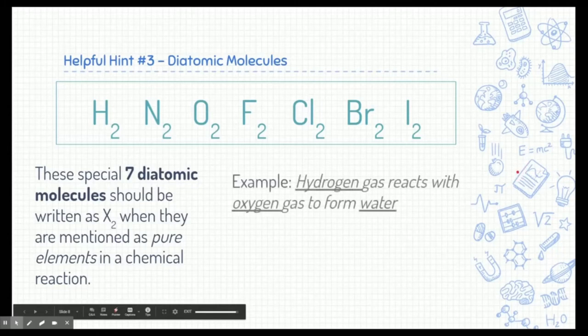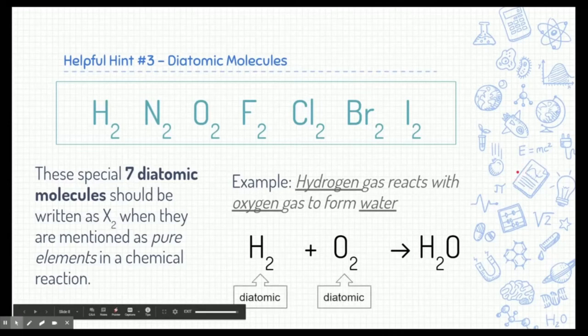So, I'm going to give you an example of that. Here, we have hydrogen gas reacting with oxygen gas to form water. Now, when we write hydrogen, we don't just write H, we write H2 because it's one of the special seven diatomic molecules. Same with oxygen. Oxygen is one of the special seven as well, so we write O2. So, both hydrogen and oxygen are diatomic.